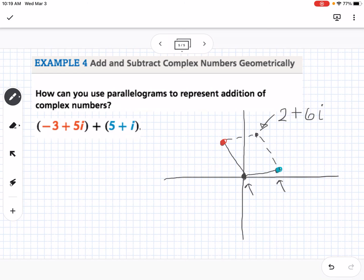Now if we go back and add the complex numbers like we know how to, we get 2 plus 6i. So you can see the connection between creating a parallelogram and just adding the different real parts and imaginary parts of a complex number.